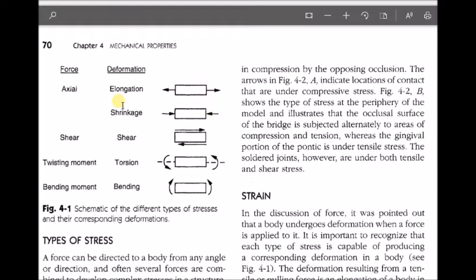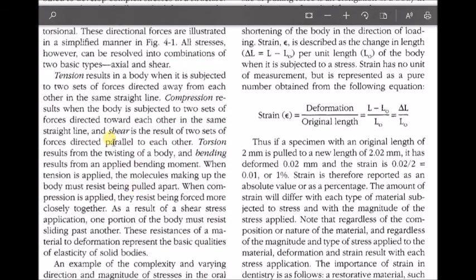In explanation, they have told that tension results when the body is subjected to two forces that get away from each other. Compression results when the body is subjected to two sets of forces directed towards each other. Shear is a result of two sets of forces directed parallel to each other. Torsion results from twisting of a body, and bending results from an applied bending moment.